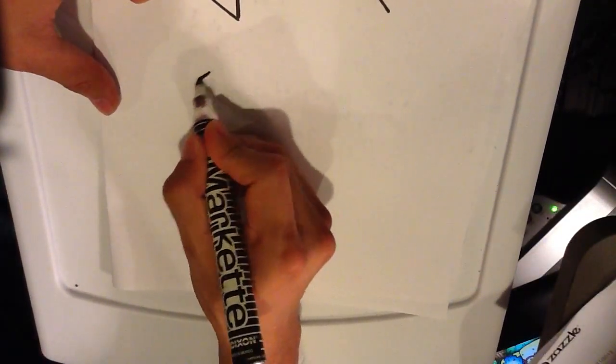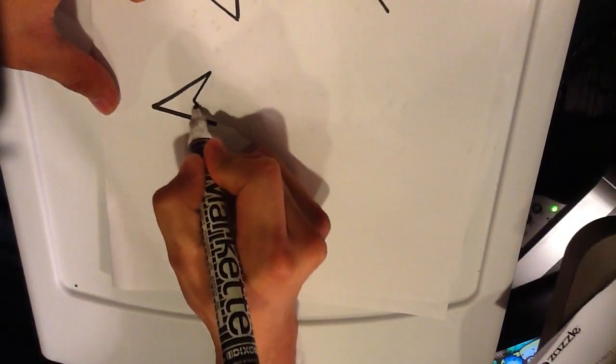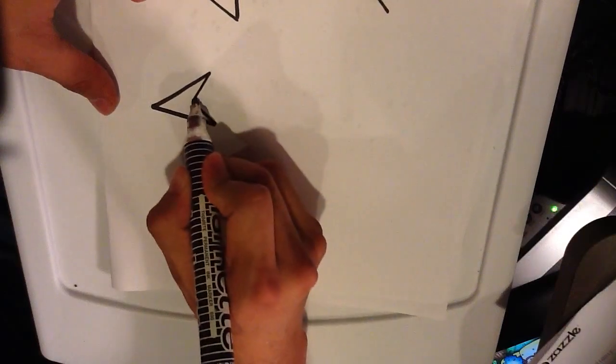If you want another kind of arrow, slightly more realistic, maybe more Robin Hood-ish, make a triangle. Angle it like that. Another triangle, close it off.